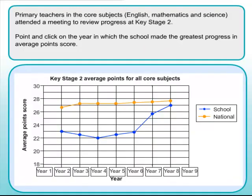Question 27. Point and click on the year in which the school made the greatest progress in average points score. The school is the blue line. The greatest progress is indicated by the steepest upward slope, and the steepest slope in any year is this one right here. So that must be year 7.